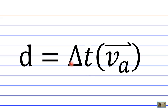So the kinematics formula that you would select is d equals delta t, which is time or the change in time, multiplied by v sub a, which is the average velocity.